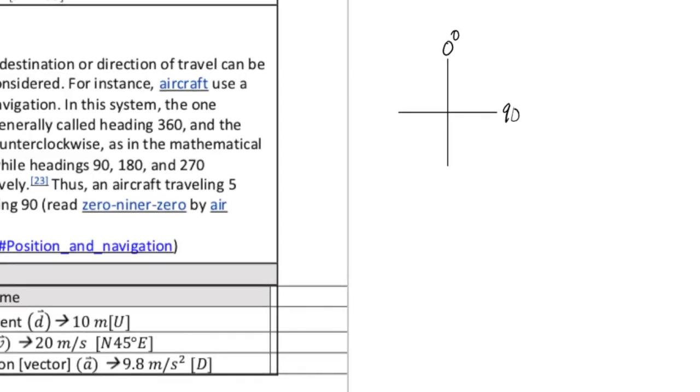In this case, how this system works is that north is considered to be zero degrees. And then you go clockwise. East would be 90 degrees. South would be 180. And west would be 270 degrees. This is the standard that is used in all navigation, including your GPS.